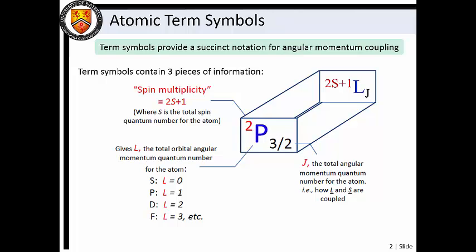Thus, we see that atomic term symbols have the general form superscript 2s plus 1, L, subscript J.